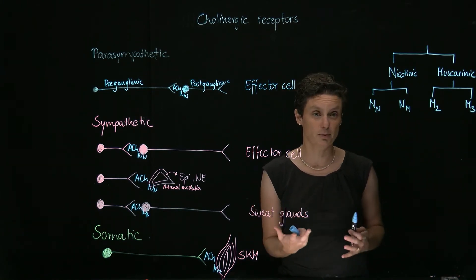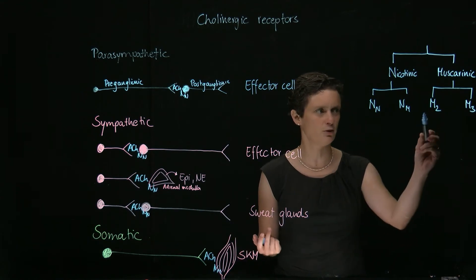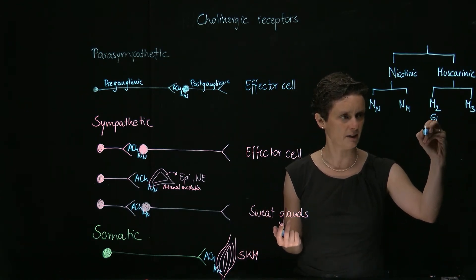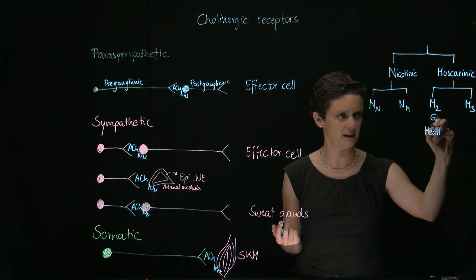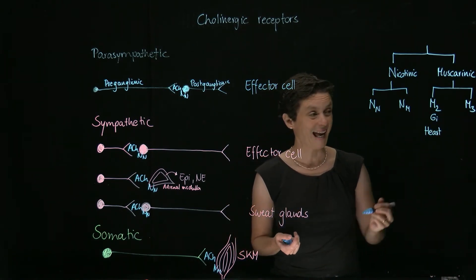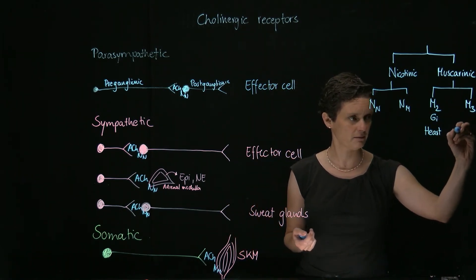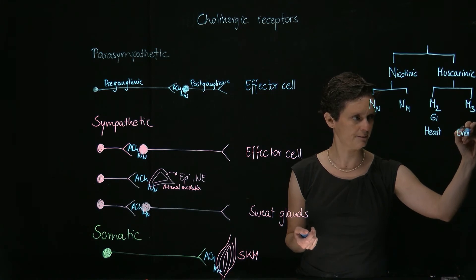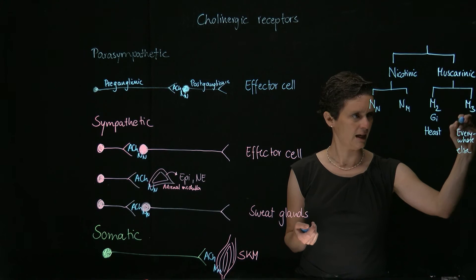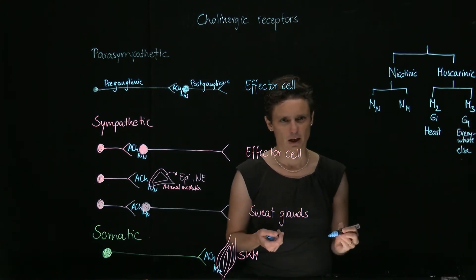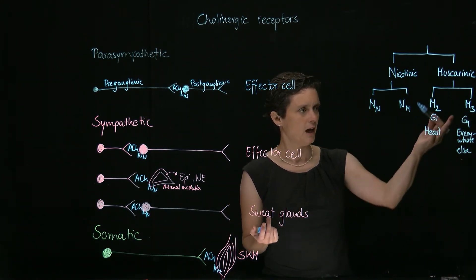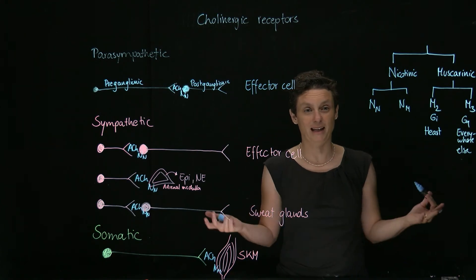And it's actually pretty easy where they are found, because M2 is found on the heart. It's GI-coupled, it's found on the heart, and it mediates inhibition of the heart. And M3 is found everywhere else, and it's a GQ-coupled receptor. So you really only have to think about M2 on the heart, and then any place else, it's going to be the M3 receptor.